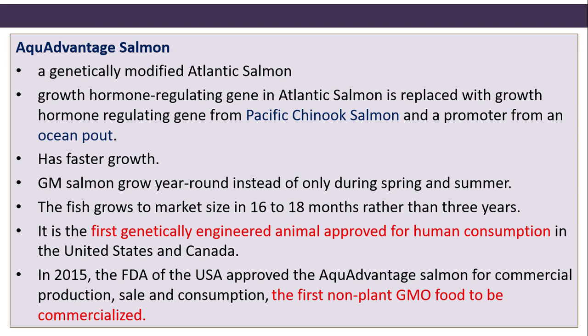AquAdvantage salmon is a genetically modified Atlantic salmon in which the growth hormone regulating gene is replaced with a growth hormone regulating gene from Pacific Chinook salmon and a promoter from ocean pout, resulting in faster growth. Genetically modified salmon grow year round instead of only during spring and summer, reaching market size in 16 to 18 months rather than three years. It is the first genetically engineered animal approved for human consumption in the United States and Canada. In 2015, the FDA approved AquAdvantage salmon for commercial production, sale, and consumption.